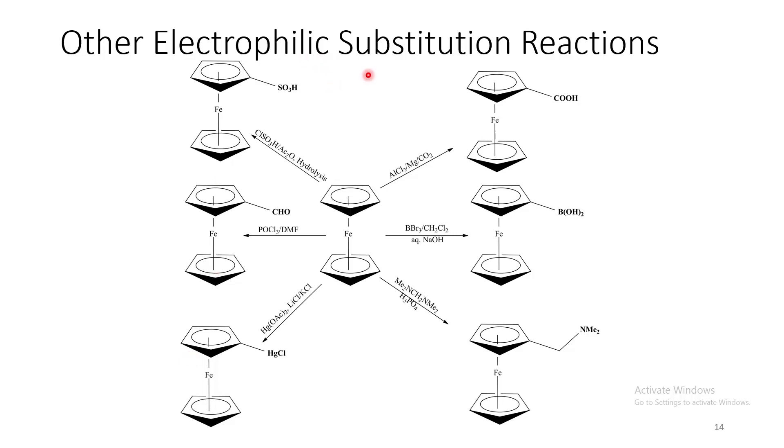These are few other electrophilic substitution reactions that gives different type of products. Among these, this particular product is very important, which is known as Ugi-amine.